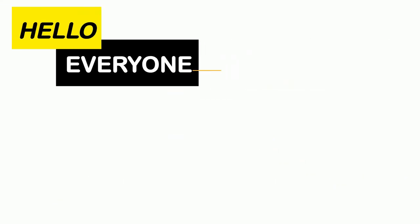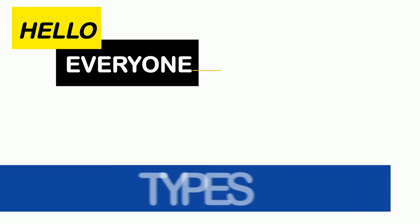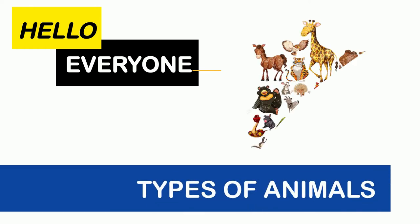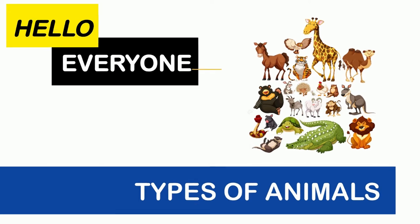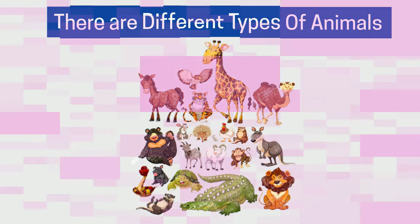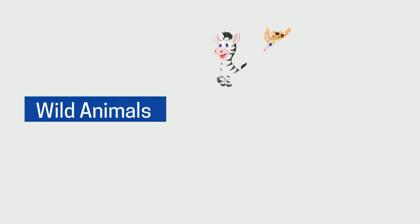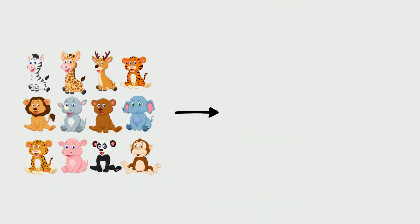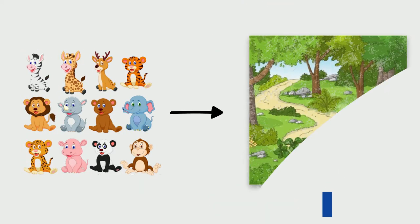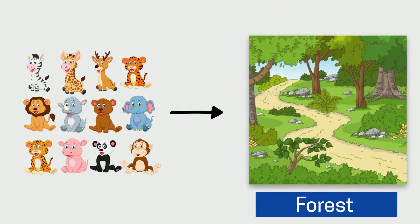Today's topic is about the types of animals. There are different types of animals. Some are wild animals — those that live in a natural environment, that is, the forest. These animals live on their own and do not depend on humans for anything.